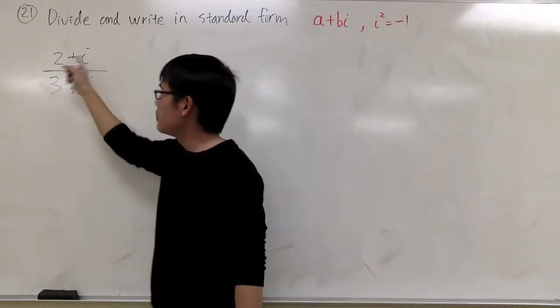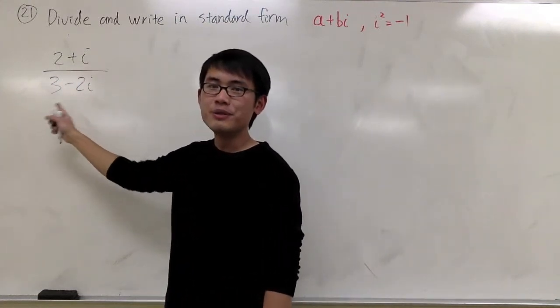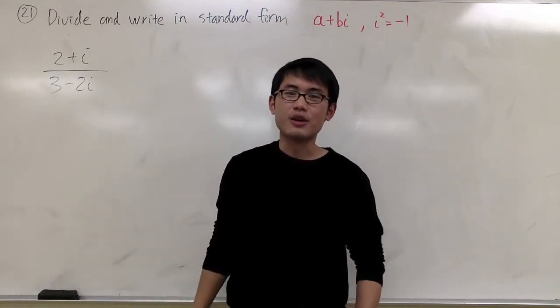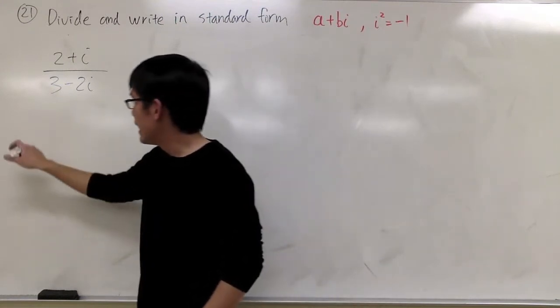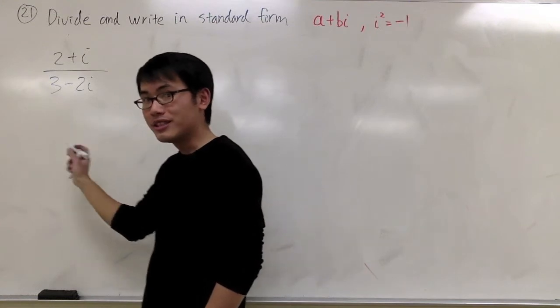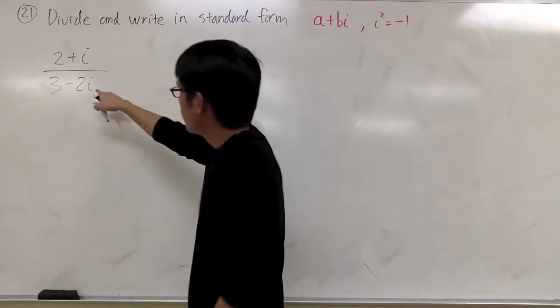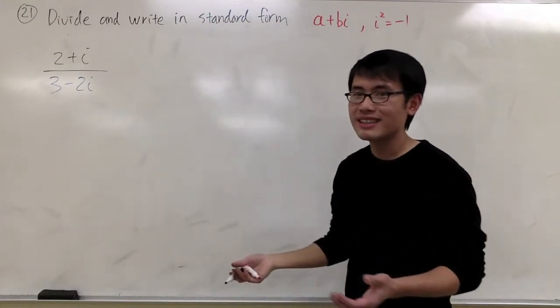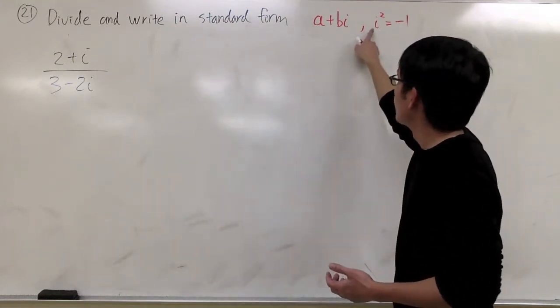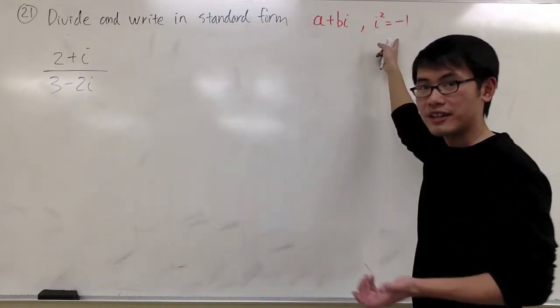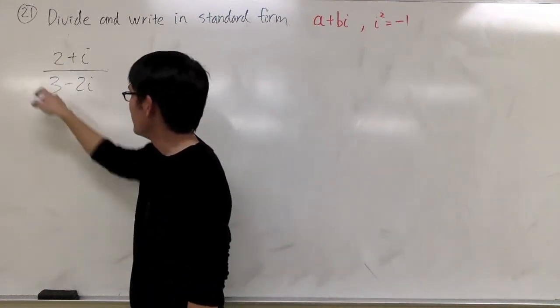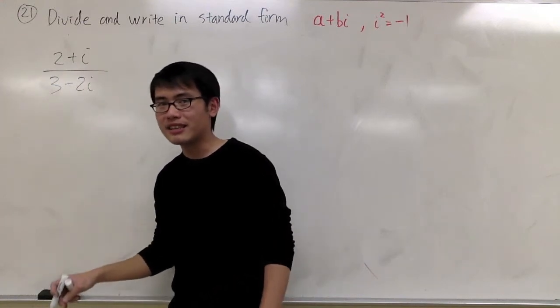Here we have 2 plus i over 3 minus 2i. The denominator is the one that we have to take care of. The way we are going to do this is that if you have i on the bottom, you have to somehow produce i squared, so that i squared will become negative 1, a regular number.